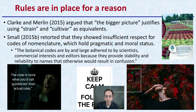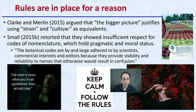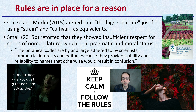Rules are in place for a reason. We may not agree with all of them, but they are in place for a reason. There's been argument that the bigger picture justifies using strain and cultivar as equivalent — essentially, why have these rules, let's just call them the same thing. But that's really not the case. Small in 2015 reported that cannabis naming showed insufficient respect for codes of nomenclature, which hold a primatic and moral status. Botanical codes are largely adhered to by scientists, commercial interests, and editors because they provide stability and reliability to names that otherwise would result in confusion. The cannabis industry right now is kind of using the code more like guidelines than actual rules, when there are official rules in place. Otherwise it's going to result in a bunch of confusion, which sadly we have a lot of right now.